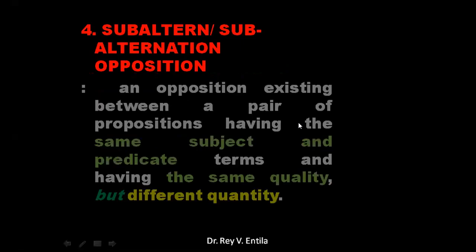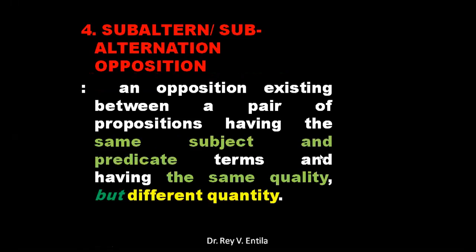Subalterns — or alternate or 'other' opposition: an opposition existing between a pair of propositions having the same subject and predicate terms and the same quality but differing in quantity. As my professor said, this is not really a real opposition because they are both affirmative — one universal, one particular — and they only differ in quantity. They appear to oppose but do not actually negate each other.